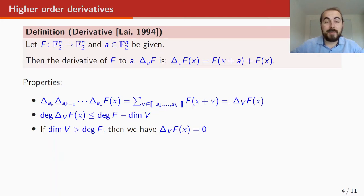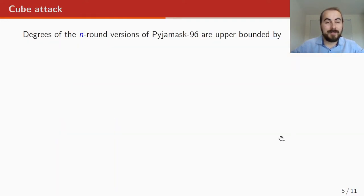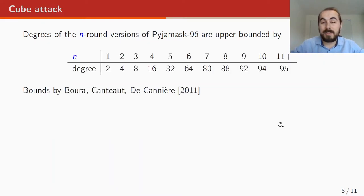So we can apply this to PYJAMASK, but before you can apply it to any function, you need to know what the degree of f is, because the dimension of V has to be at least the degree of f. So the degrees of the n-round versions of PYJAMASK-96 are upper bounded by the values in this table. The authors of the original PYJAMASK paper already included them, and they used the bounds by Boura-Canteaut and Coggia.